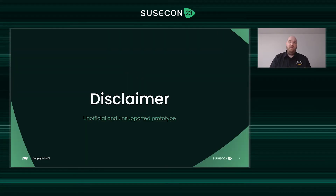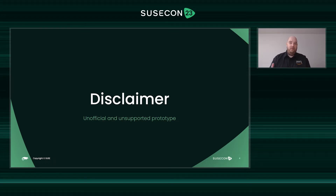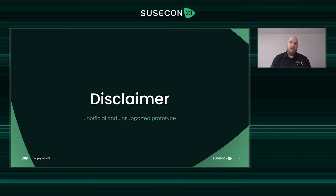First, a short disclaimer because SUSE ALP is still in an early development phase. I would even call it a prototype, and I think SUSE does the same, where a lot of things can and definitely will change before a final release. The EC2 AMI I built and talk about is an unofficial and unsupported image, which is for testing purposes only. I did it because I'm really excited about this next-generation operating system and I wanted to share my learnings and experiences. My statements are based on my interpretation and understanding of publicly available information from SUSE, which are definitely subject to change.